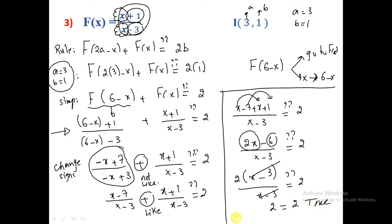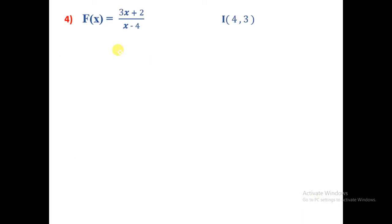Since the result is true, we can say that point I with coordinate (3, 1) is a center of symmetry. Part 4: f(x) = (3x+2)/(x-4), and we want to prove I(4, 3) is a center of symmetry. So a = 4 and b = 3.